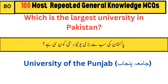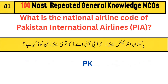Which is the largest university in Pakistan? University of the Punjab. What is the national airline code of Pakistan International Airlines? PIA.